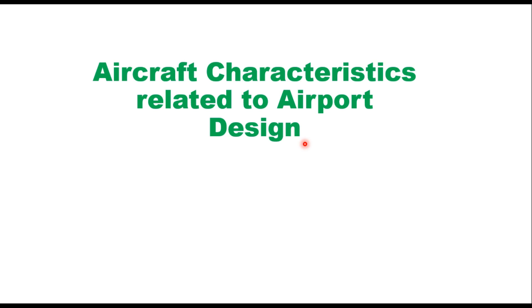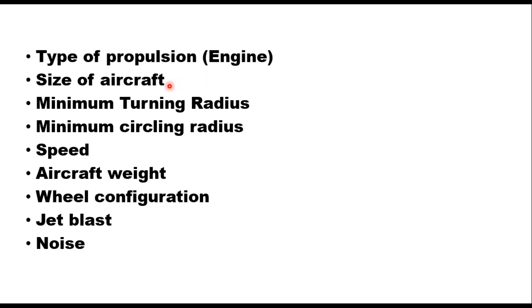The important characteristics which affect the planning and design of airports are: type of propulsion (that is the engine), size of aircraft, minimum turning radius, minimum circling radius, speed, aircraft weight, wheel configuration, jet blast and noise. We shall discuss each of these characteristics briefly in this session.